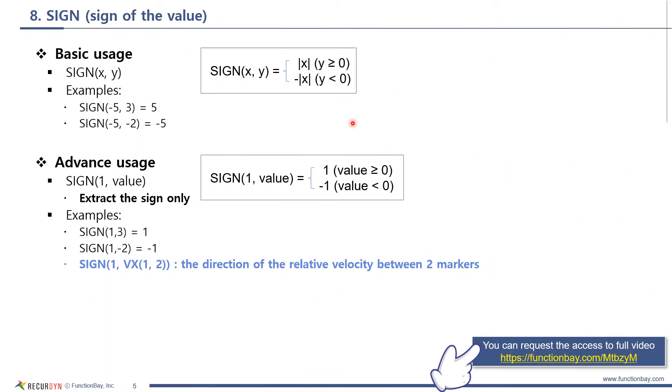Next one is sine function. It extracts the sine of y value. Rather than the basic usage, if you use it with sine with parameters 1 and value as shown below, you can use it as a function to extract only the sine of value. For example, if you need to extract only the direction of the relative velocity, you can use it as sine with the parameters 1 and vx. Then, the direction of the relative velocity between two markers can be obtained.